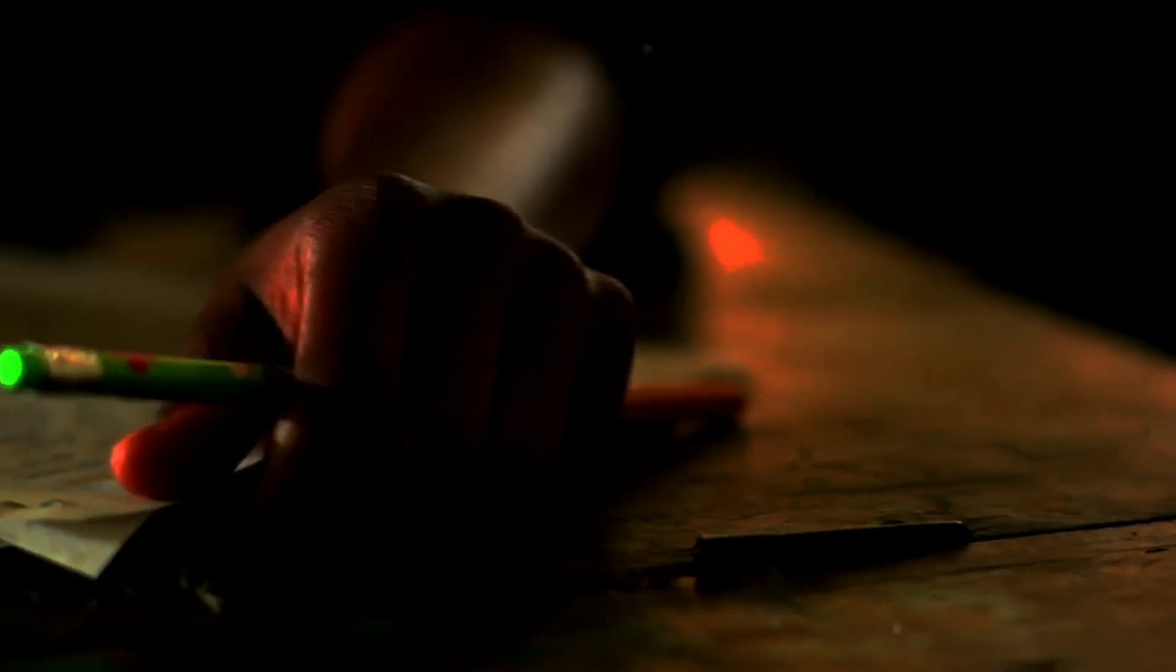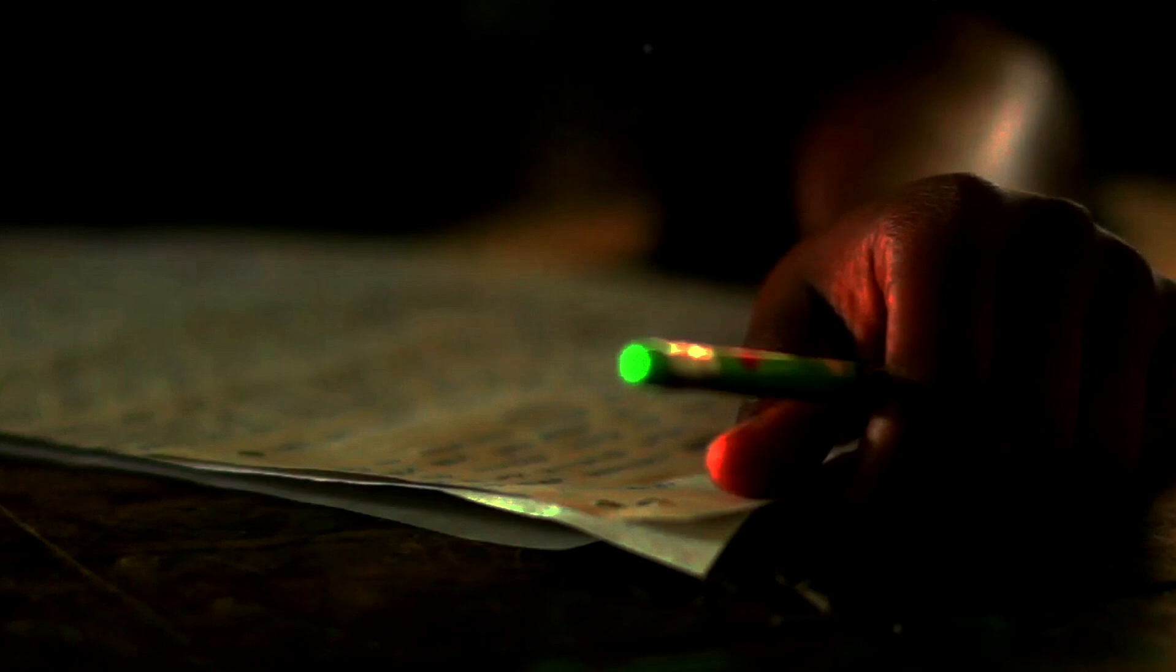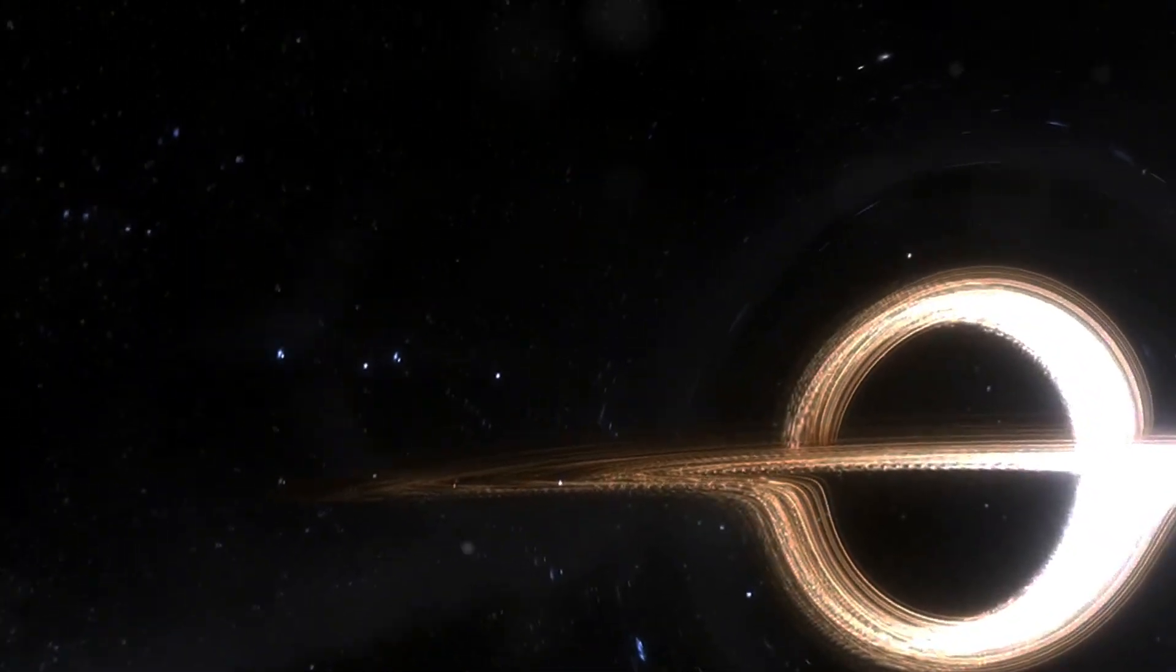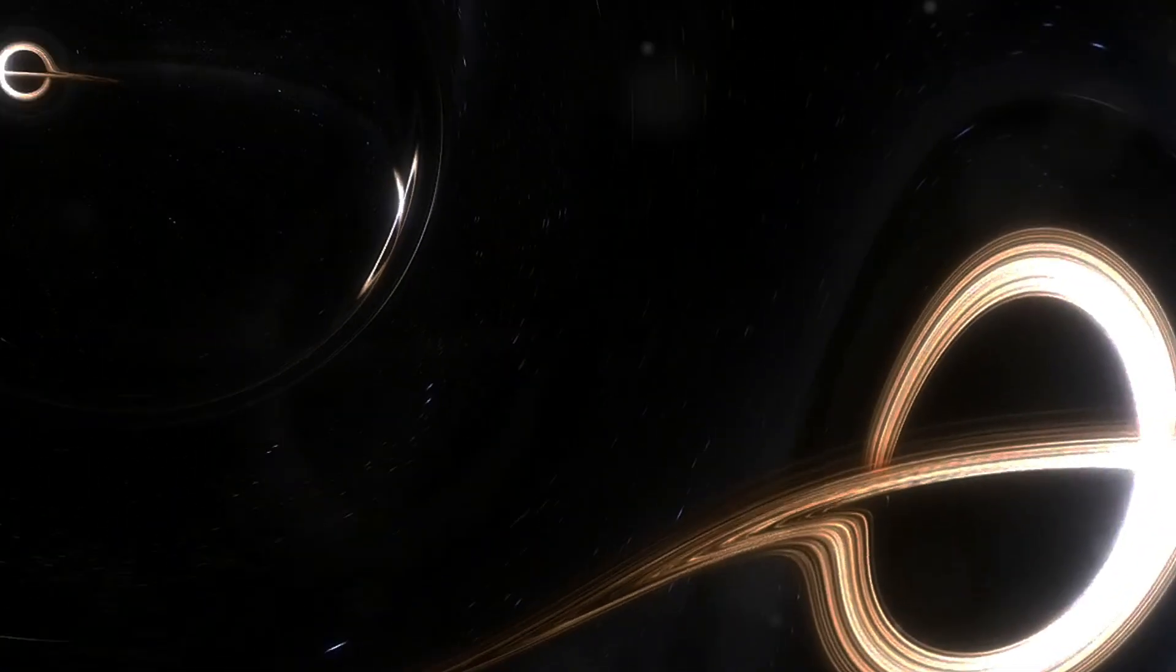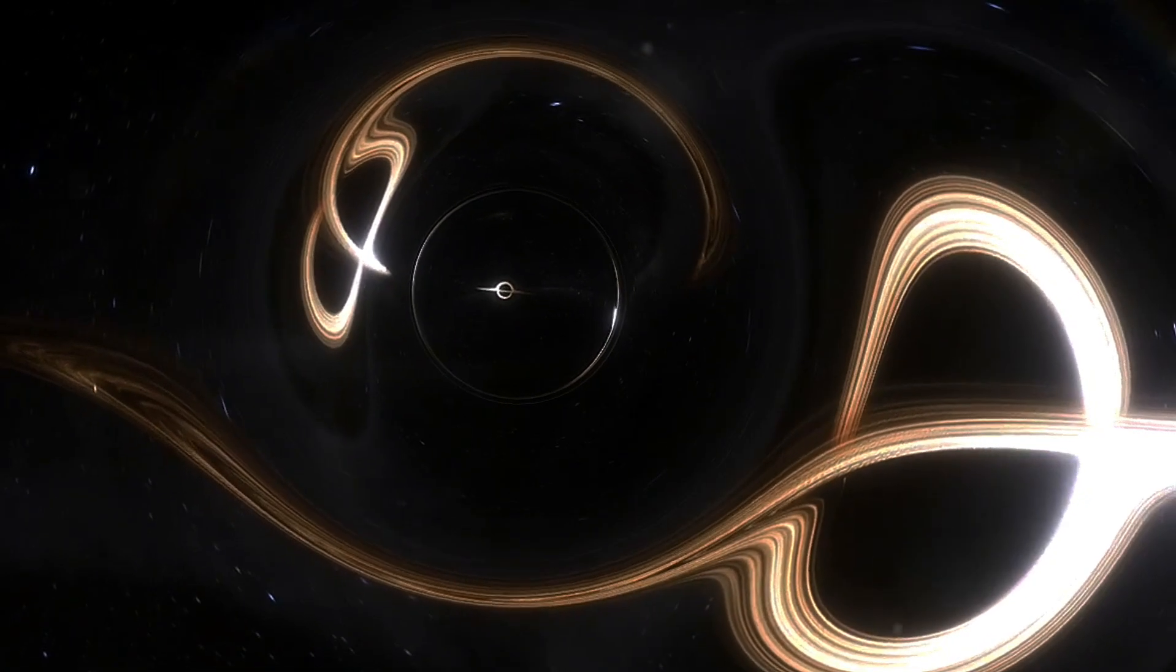Let's rewind to 1917. Einstein was working on his field equations of general relativity. These equations describe the fundamental interaction of gravitation as a result of space-time being curved by mass and energy.